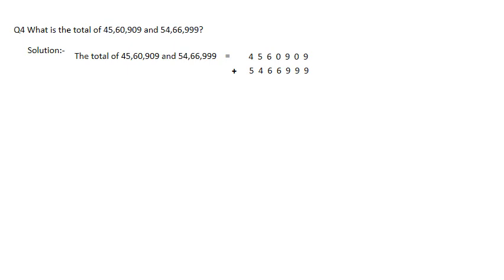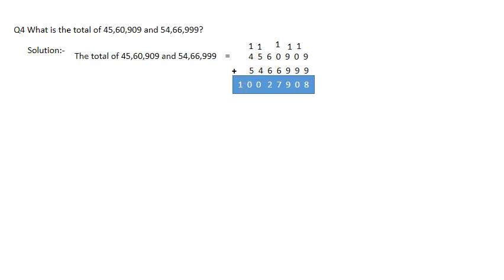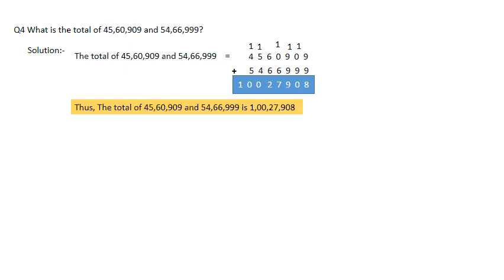Let's check the answer. 9 plus 9 is 18 — carry 1; 9 plus 0 is 9, plus 1 carry is 10 — carry 1; 9 plus 9 is 18, plus 1 is 19 — carry 1; 6 plus 0 is 6, plus 1 carry is 7; 6 plus 6 is 12 — carry 1; 4 plus 5 is 9, plus 1 carry is 10; 5 plus 4 is 9, plus 1 carry is 10. This is 100, this is 1,000, this is lakh, and this is crore. Your answer is 1 crore 27,908. Thus, the total of the two given numbers is 1,00,27,908.